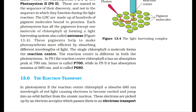Each photosystem has all the pigments, except one molecule of chlorophyll A, forming a light-harvesting system also called the antenna. The single chlorophyll A molecule forms the reaction center. In PS1, the reaction center chlorophyll A has an absorption peak at 700 nm, hence is called P700, while in PS2 it has absorption maxima at 680 nm and is called P680.